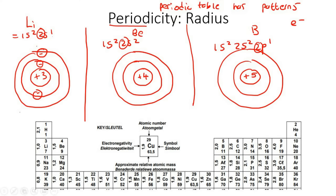It is more positive, so it would be able to pull its electrons much more strongly towards itself. So the overall size or radius of boron is going to be smaller than beryllium, which would be smaller than lithium.